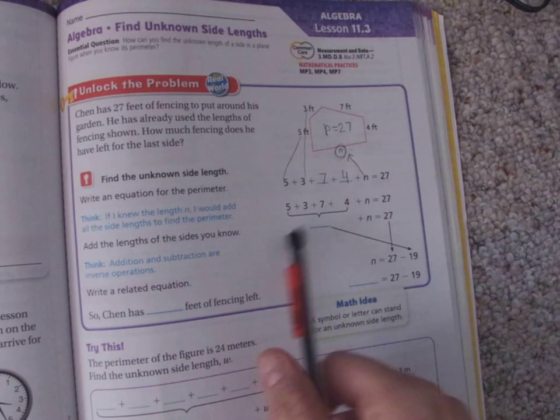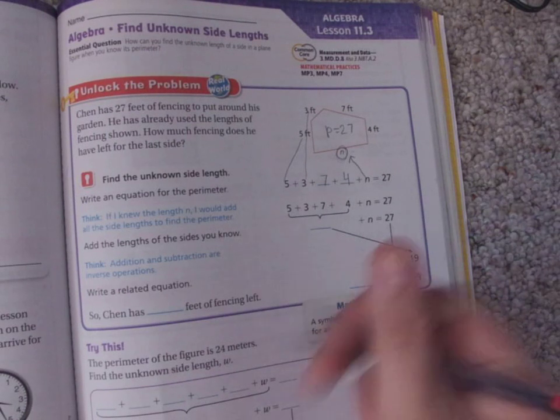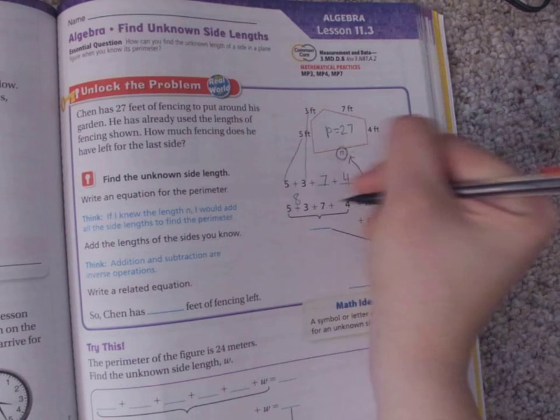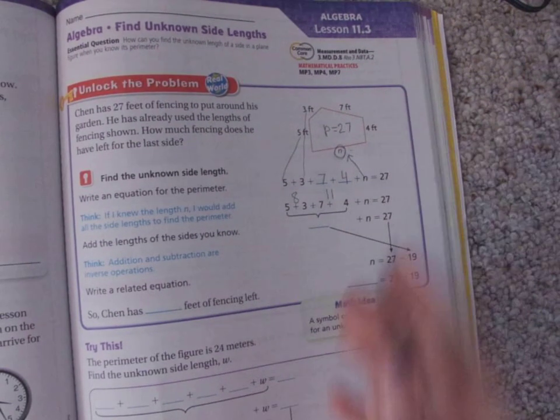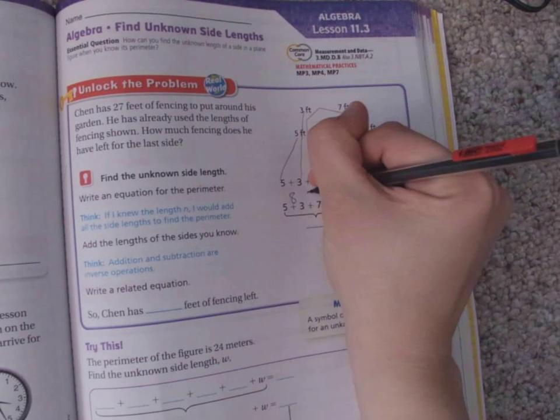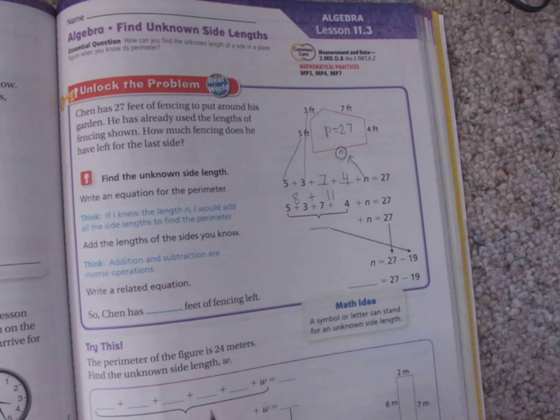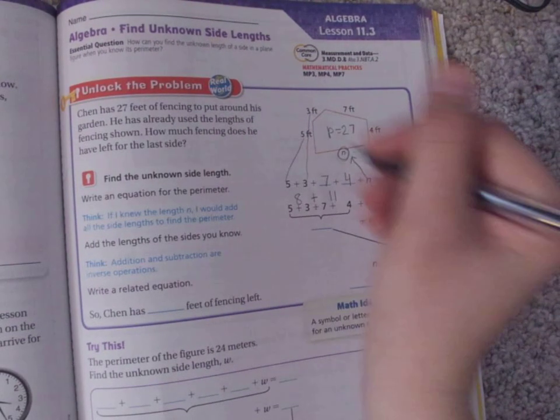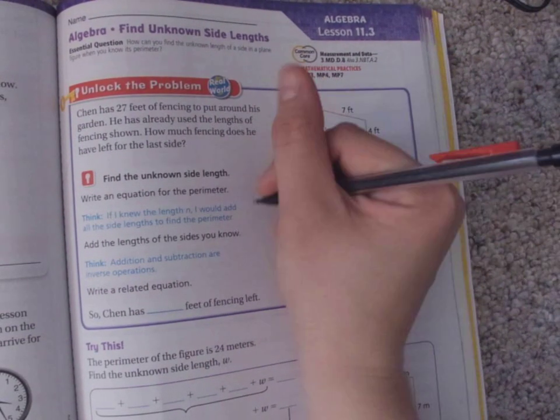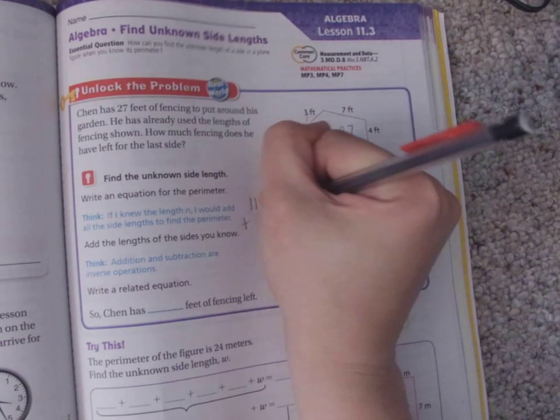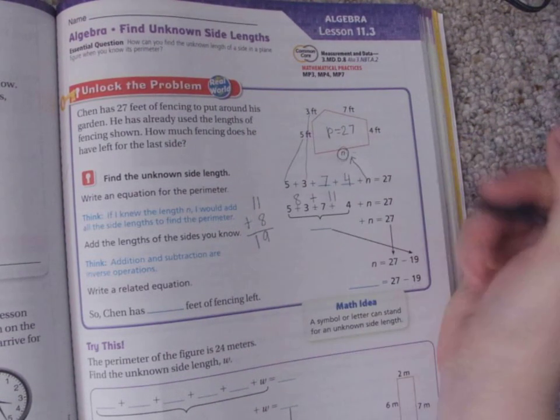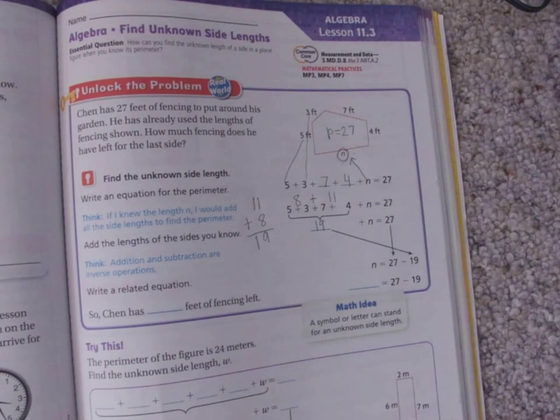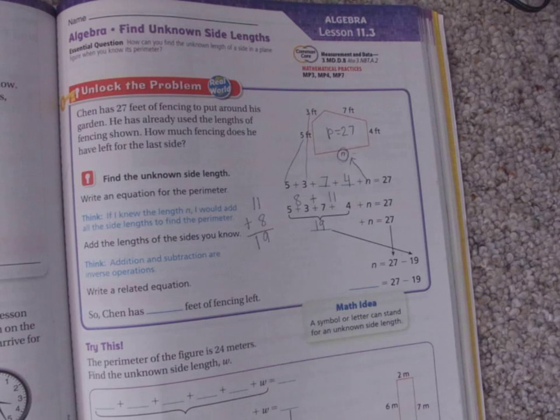So first, 5 plus 3 is 8. 7 plus 4 is 11. So now I need to do 8 plus 11. I know that it's 19, but if you need to write it out, you can do it this way. 8 plus 1 is 9. 19.